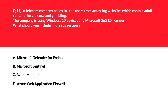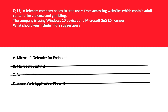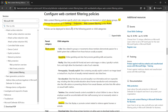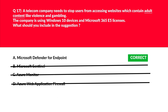Question 17: mark the keyword — 'adult content.' Whenever you see keywords like adult content in a question, think Microsoft Defender for Endpoint. In the documentation, under Settings > Endpoints > Web Content Filtering > Rules, there is a category for adult content and gambling. Any question about adult content filtering — select Microsoft Defender for Endpoint. Lock this as the correct answer.